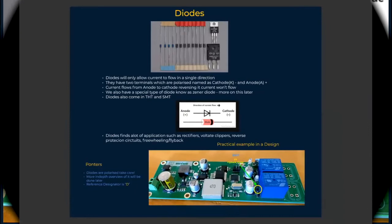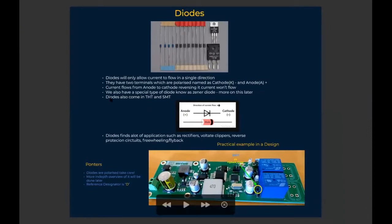Another fundamental component is the diode. I know most of us have had diodes right from high school, moving forward, even if we never dwelt much into electronics. So diodes will only allow current to flow in a single direction. That's one of the biggest or most core properties of diodes - they allow current only to flow in one direction.